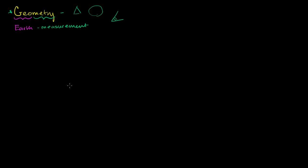Let's start from the basics. If we start at a dot — that dot right over there — we'd literally call that a point. The fun thing about mathematics is that you can make definitions; we could have called it an armadillo, but we call it a point, which matches everyday language. What's interesting about a point is that it is just a position. You can't move on a point — if you moved in any direction at all, you would no longer be at that point.